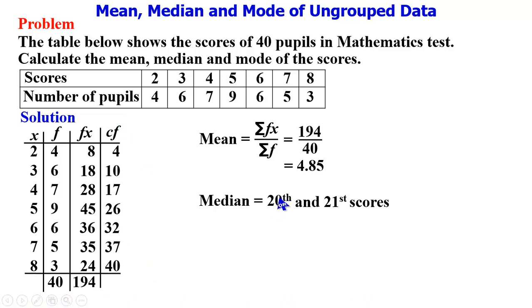So with this cumulative frequency, we are going to look for where we can have the 20th and 21st. So it falls here. The 20th and the 21st position will be within this 26. The score at that point is 5, so we have the median score to be 5.